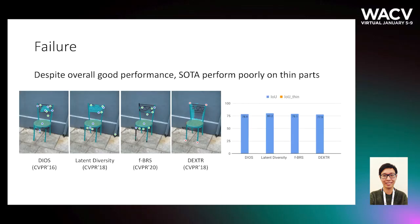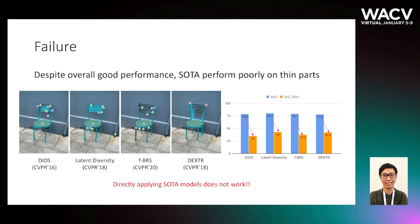Despite the overall good performance of existing state-of-the-art methods, we found that they can hardly be applied to segment objects with thin structures such as the gecko in this example. We analyze the IOU around thin regions, which we call IOU-thin, and observe that the performance is fairly poor. We attribute this failure to the following factors.